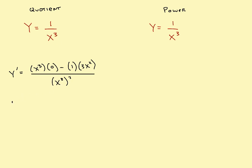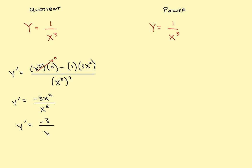Let's simplify. Y prime: the first term has 0 times anything, so that entire term goes to 0. What's left is minus 3x squared in the numerator divided by x to the sixth. That simplifies to negative 3 divided by x to the fourth, after canceling two x's from top and bottom. So there is the derivative using the quotient rule.